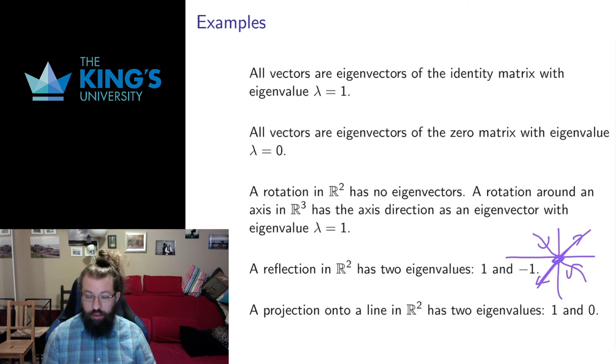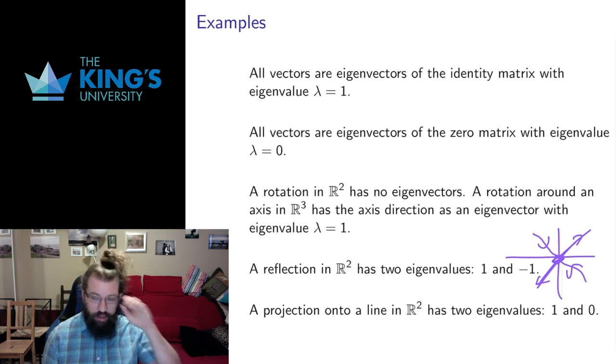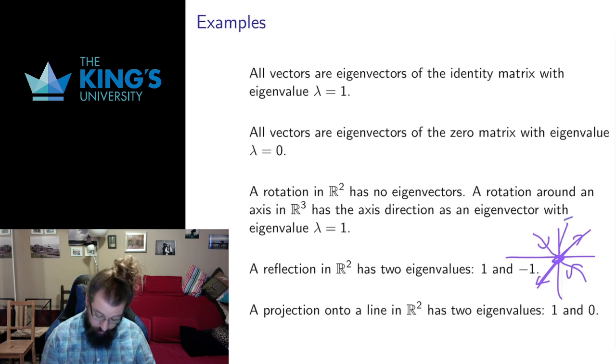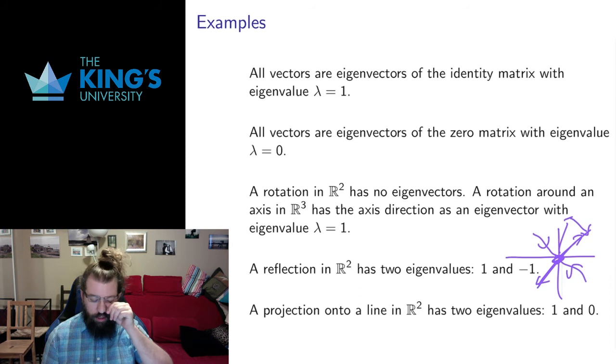So again, I have a perpendicular direction that gets sent to 0. A direction that gets sent to 0 is an eigenvector with eigenvalue 0. Things that are in some other direction get projected down. Those are not going to have an eigenvector property because their directions change. They're not just scaled by something. So a projection onto a line in R2 also has two eigenvalues: 1 and 0 instead of 1 and negative 1.